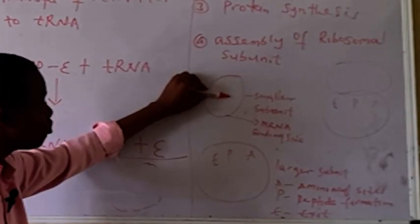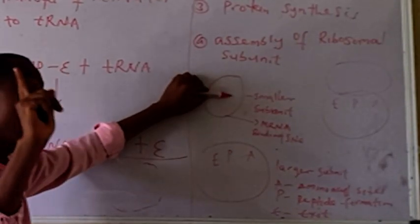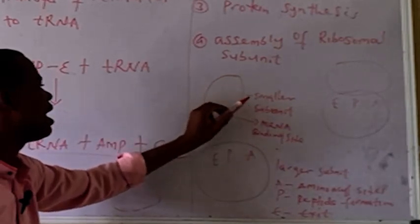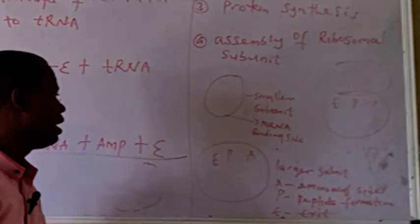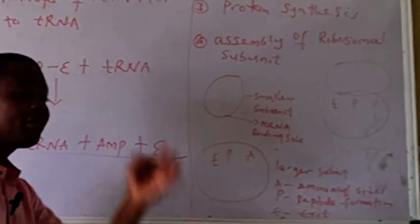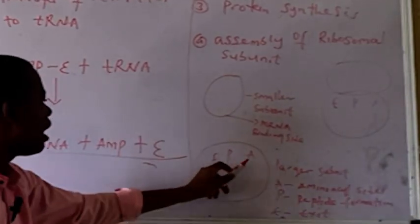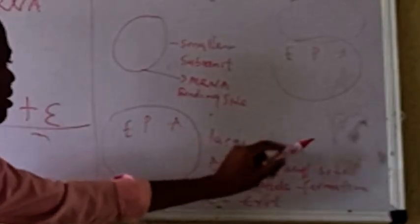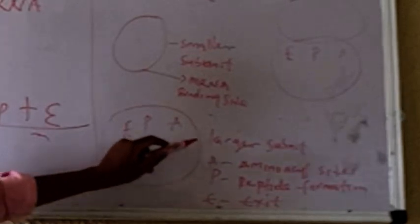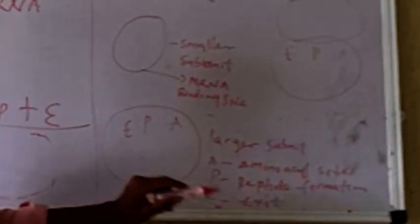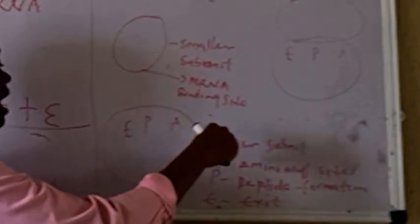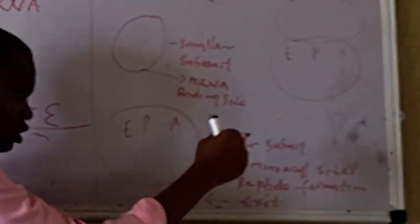In the smaller subunit we have just one binding site: the mRNA binding site. In the larger subunit we have three binding sites: the amino acid binding site (A), the peptide formation site (P), and the exit site (E). These are always represented as APE or EPA.